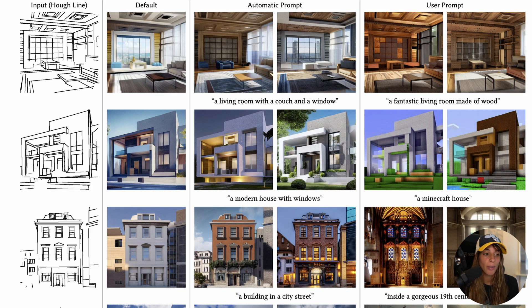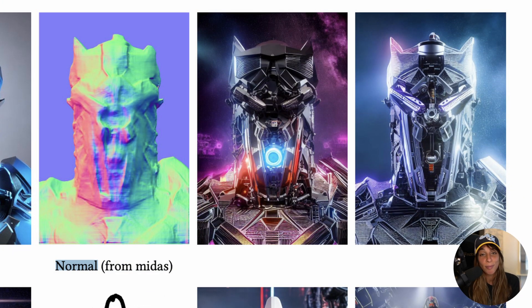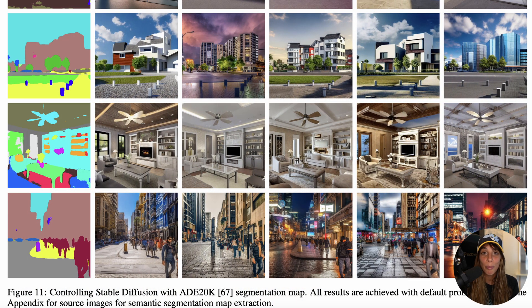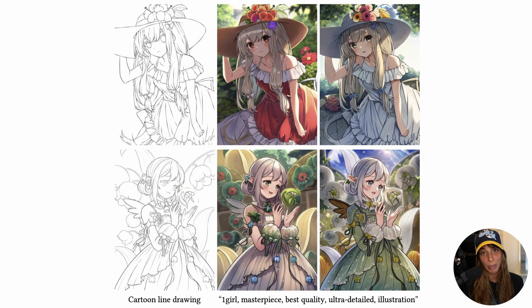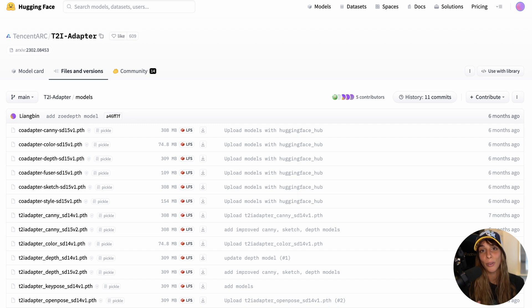We then have MLSD, which stands for Mobile Line Segment Detection, and it's very useful for interior design, buildings, and architectural subjects. Similar to the depth map, we have the Normal Map, which detects the light inside the image and is very good for isolating a main subject from the background. With the Segmentation Map, we detect what type of objects or subjects are in an image, shown as different colors. Line Art is quite useful — similar to Canny but sometimes better, especially for anime pictures. You can download all of these models from Hugging Face, and there are also other ControlNet models available.